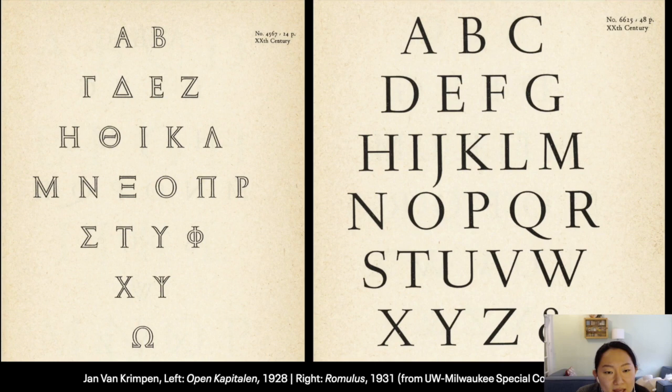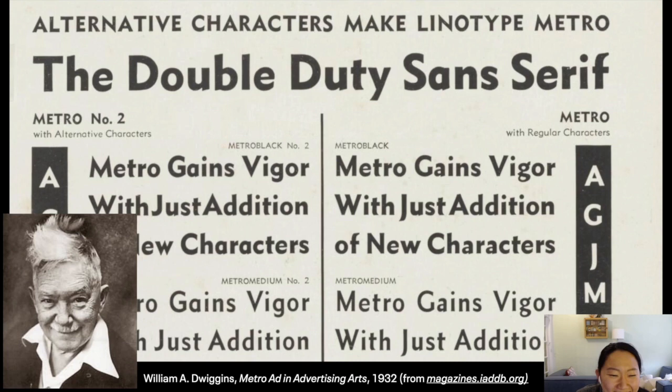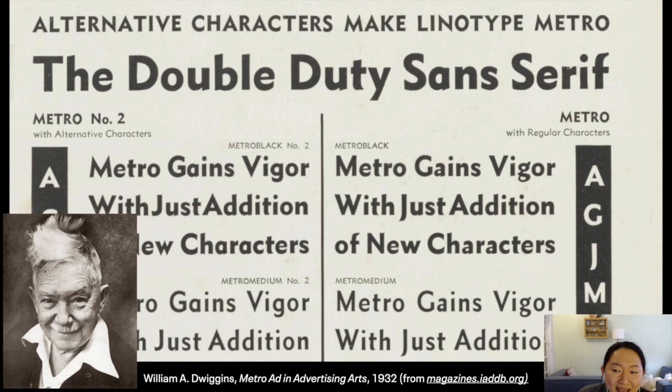William A. Dwiggins — his photo sort of makes me smile. He seems like he would have been a fun person to hang around, along with Goudy. He studied with Goudy, and went on to make a lot of different styles with different characters. He was good at everything: illustration, type design, typography. He has a lot of fun quotes.